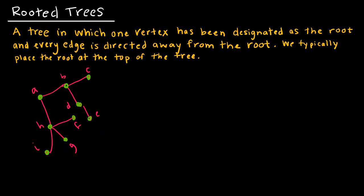A rooted tree is a tree in which we pick out one vertex to be designated as the root. Every other edge is directed away from that root, and we typically put the root at the top of the tree. I'm going to choose a random vertex already on my graph and make a rooted tree out of it.